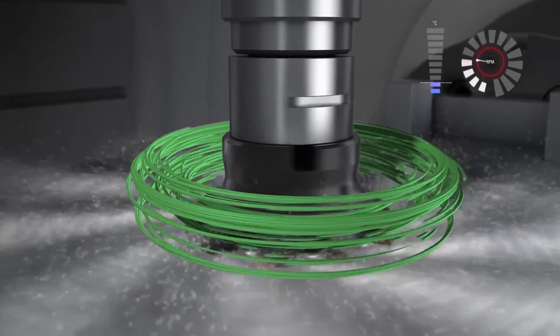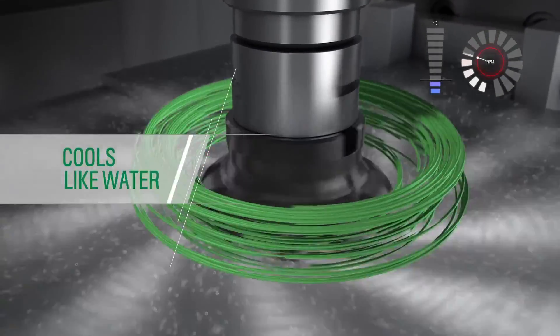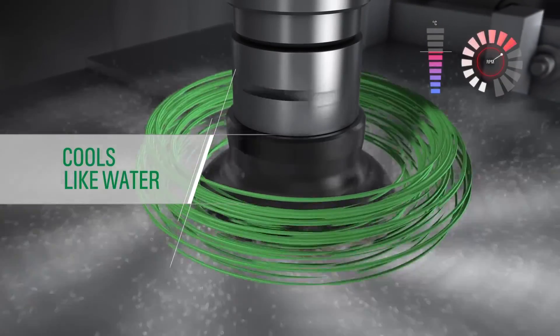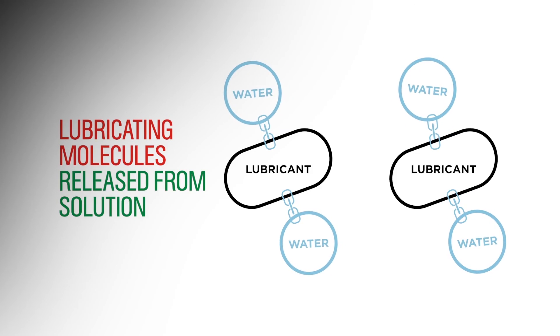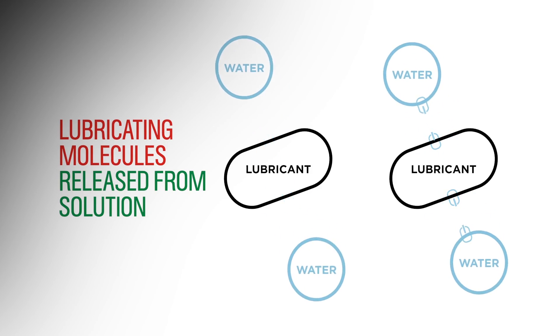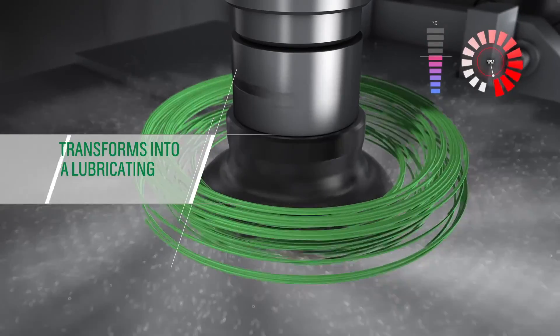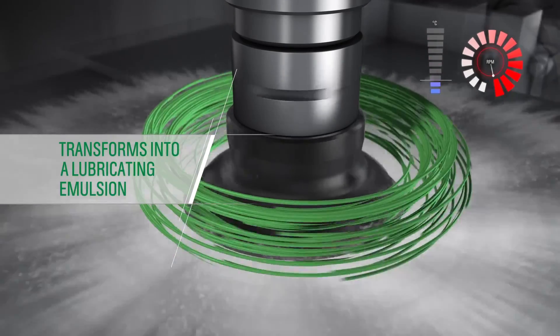At lower temperatures, Sintilo is a clear coolant like water. But as speeds and temperatures rise, something amazing happens. The lubricating components in Castrol Sintilo are released from solution, transforming Sintilo into a lubricating emulsion that coats the cutting edge.